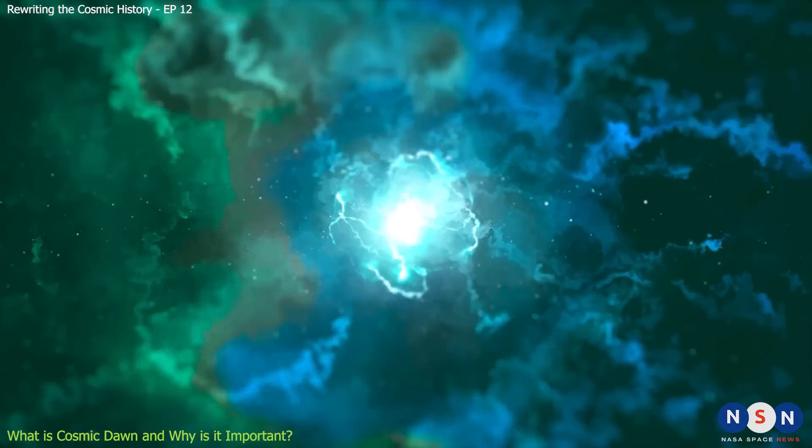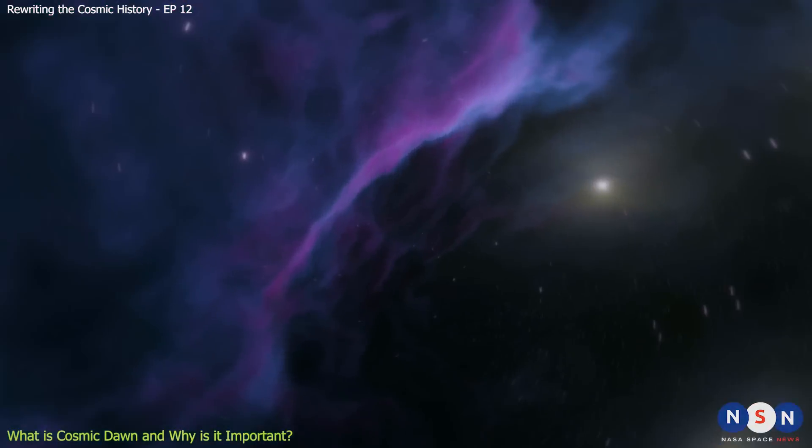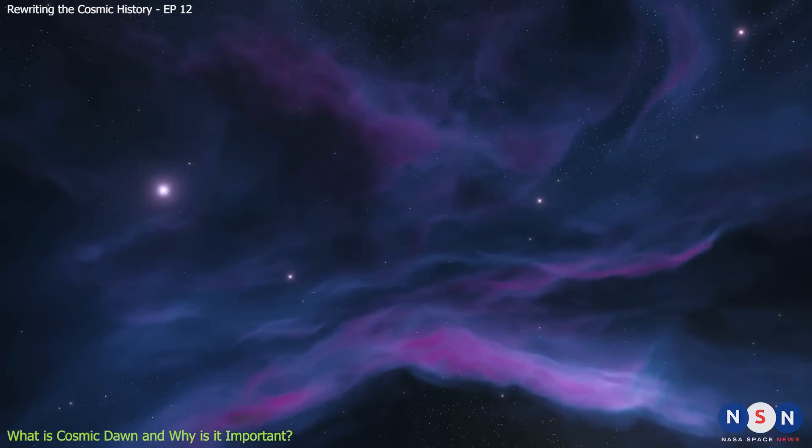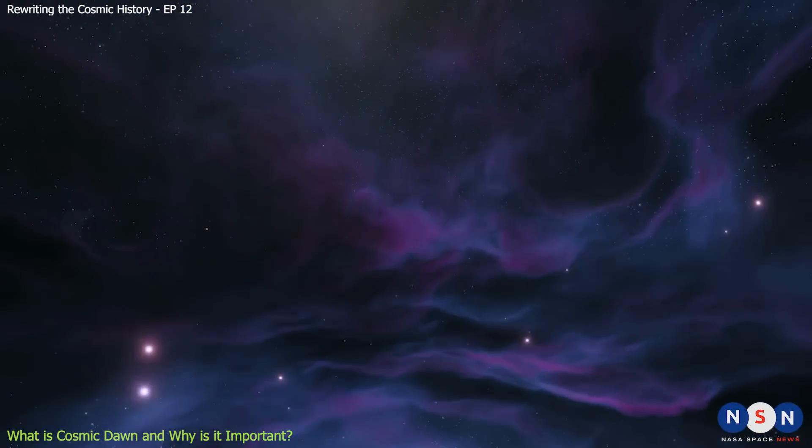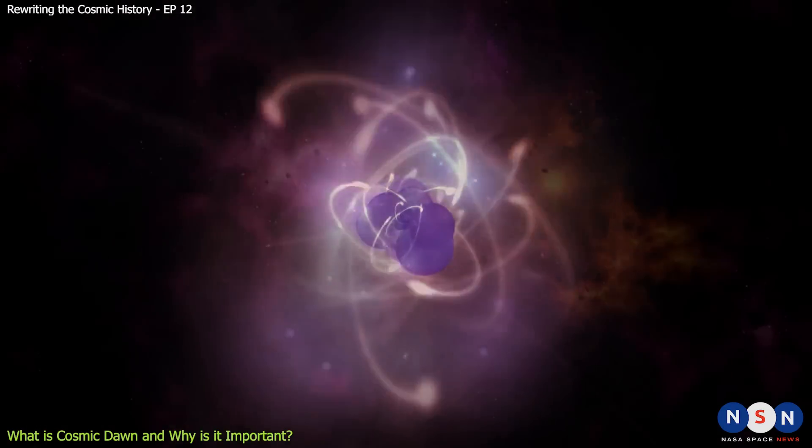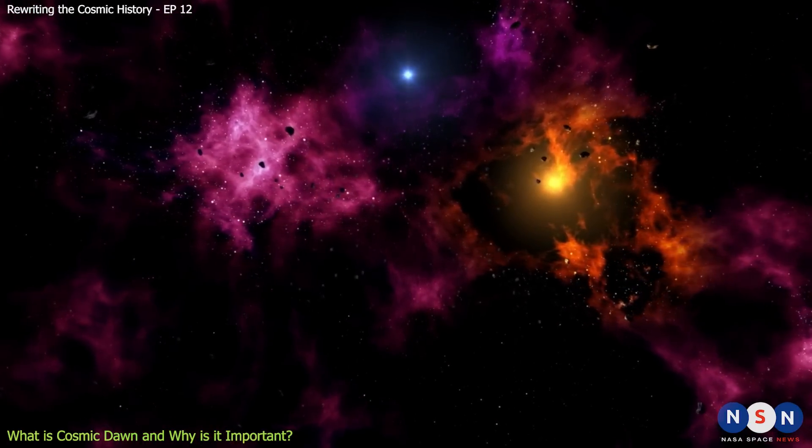Star formation can be traced by different types of light that are emitted by stars and gas. One of these types of light is H-alpha emission. H-alpha emission is a red light that is emitted by hydrogen atoms when electrons fall from a higher energy level to a lower one. H-alpha emission tells us that hydrogen gas is being heated up by hot stars.